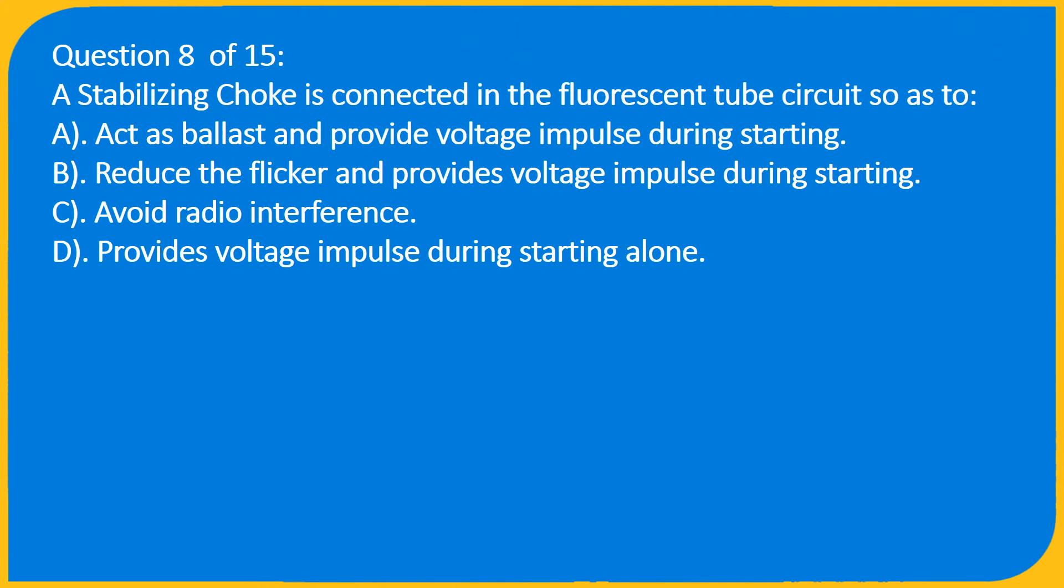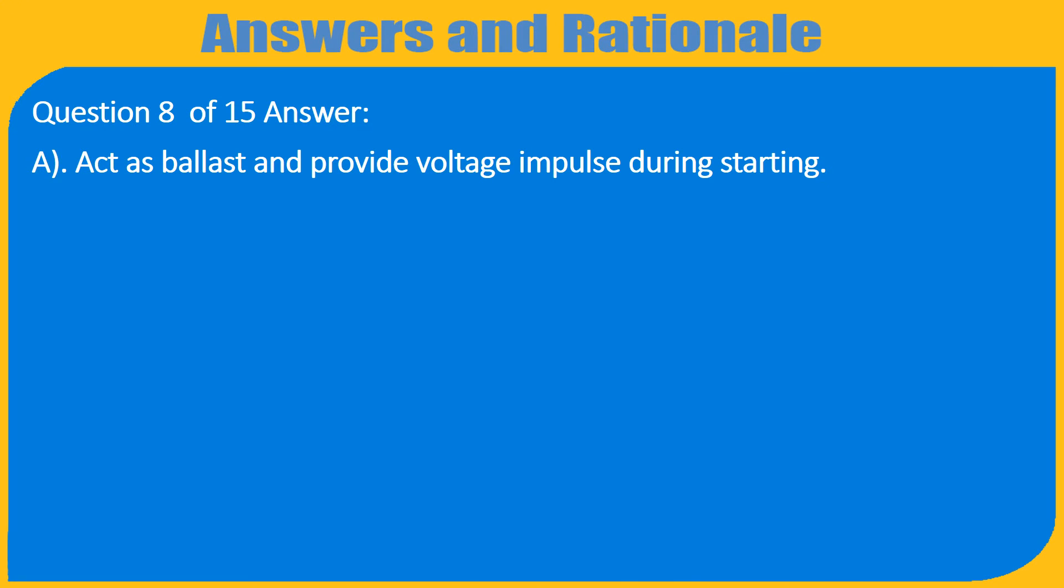Question 8 of 15: A stabilizing choke is connected in the fluorescent tube circuit so as to A. Act as ballast and provide voltage impulse during starting, B. Reduce the flicker and provides voltage impulse during starting, C. Avoid radio interference, D. Provides voltage impulse during starting alone. Answer: A. Act as ballast and provide voltage impulse during starting.